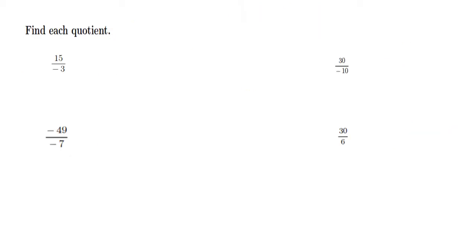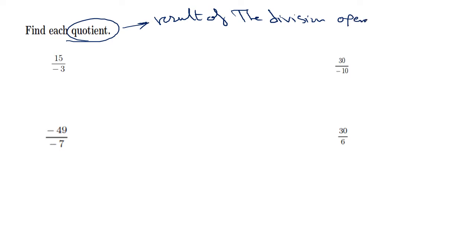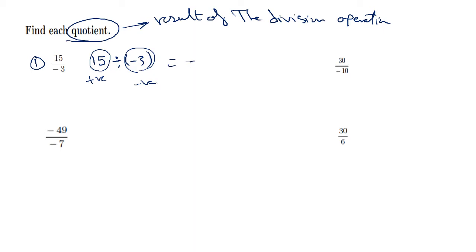The final operation is division — finding the quotient means finding the result of a division operation. For 15 divided by negative 3, this can be written as a fraction or with the division sign. We follow the same rule as multiplication: if one number is positive and the other is negative, the signs are different, so the answer is negative. And 15 divided by 3 is 5, giving negative 5.